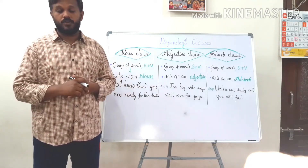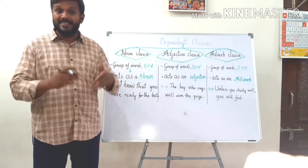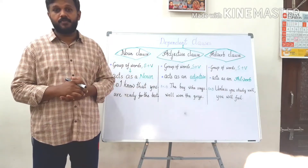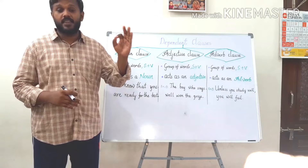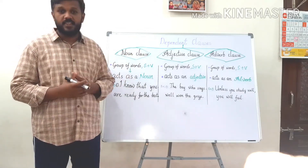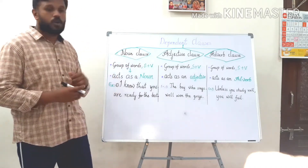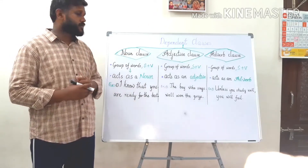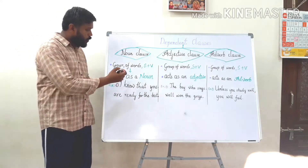Clauses are divided into two types: dependent clause and independent clause. Independent clauses are sentences, as they are able to stand on their own and have complete sense. Now, dependent clauses are used in sentences based on their functions, and they are mainly divided into three types: noun clause, adjective clause, and adverb clause.